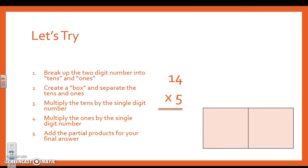I believe we already did this one. So we're going to skip this. So next we're going to do 67 times 5. So I'm going to first step, break up into tens and ones. Create a box and separate my tens and ones.